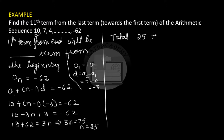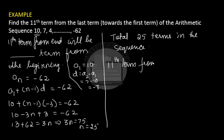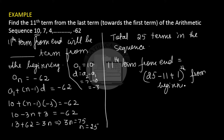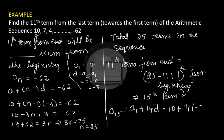There are 25 total terms in the sequence. The 11th term from the end will be at position 25 − 11 + 1 = 15th term from the beginning. Therefore we find a15 = a1 + 14d = 10 + 14 × (−3) = 10 − 42 = −32. So the 11th term from the end is −32.